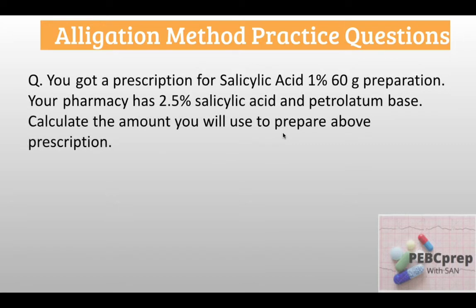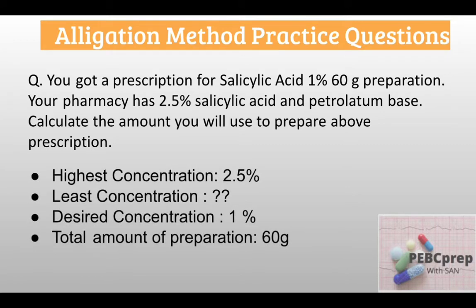In the next question: you got a prescription for salicylic acid 1%, 60 gram preparation. Your pharmacy has 2.5% salicylic acid and petrolatum base. Calculate the amount you will use to prepare the above prescription. Again, we extract four important pieces of information. Here is a very interesting fact — we have our highest concentration, 2.5%, but the least concentration is not mentioned. The desired concentration is 1% and the total amount of preparation is 60 grams.